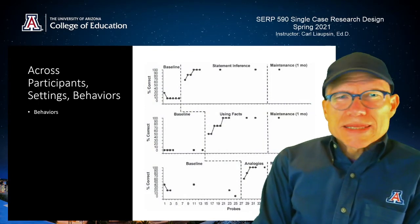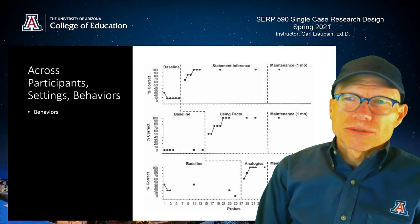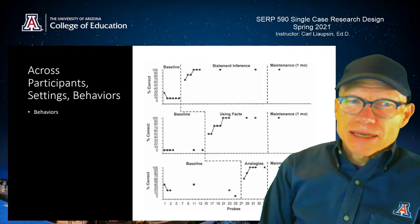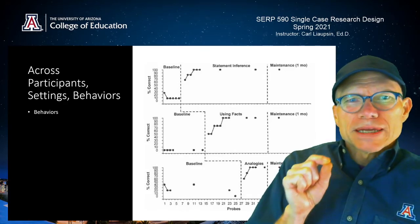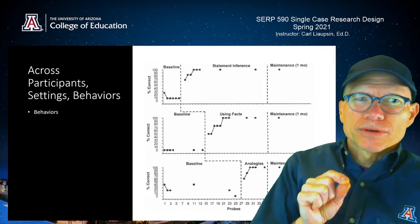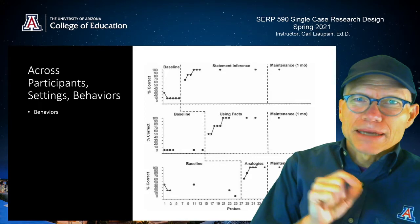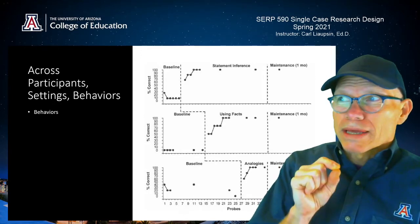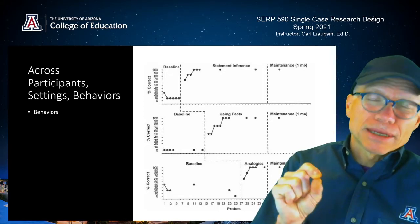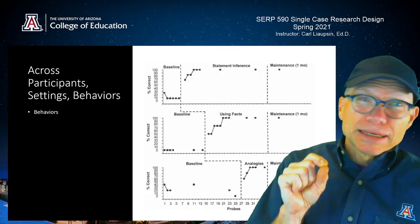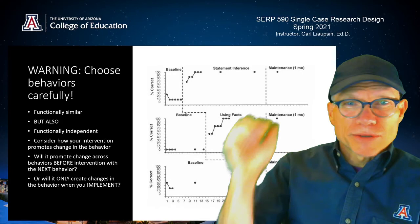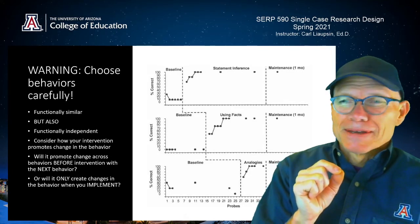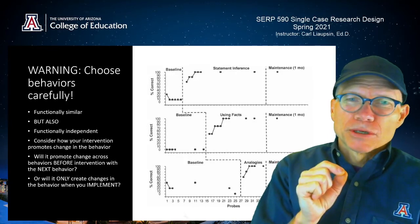Another but more tricky thing to do in multiple baseline designs is to work across behaviors with a single client. In this case they're looking at multiple reading comprehension behaviors: statement inference, using facts, and making analogies. They've demonstrated that their intervention works when they apply it to each of these skills related to comprehension, and they applied them separately. It's a tricky business and there are things you have to be really careful about.